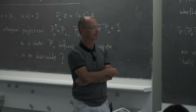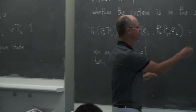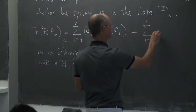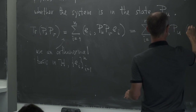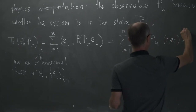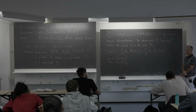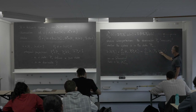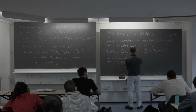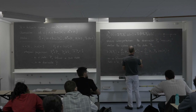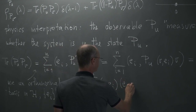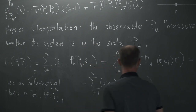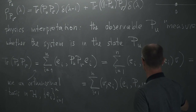We know how the projection acts, so that equals the sum over i of ⟨e_i, P_u (⟨v, e_i⟩ v)⟩. Since the Hermitian product is linear in the second term, I can rewrite it as sum over i of ⟨v, e_i⟩ ⟨e_i, P_u v⟩.